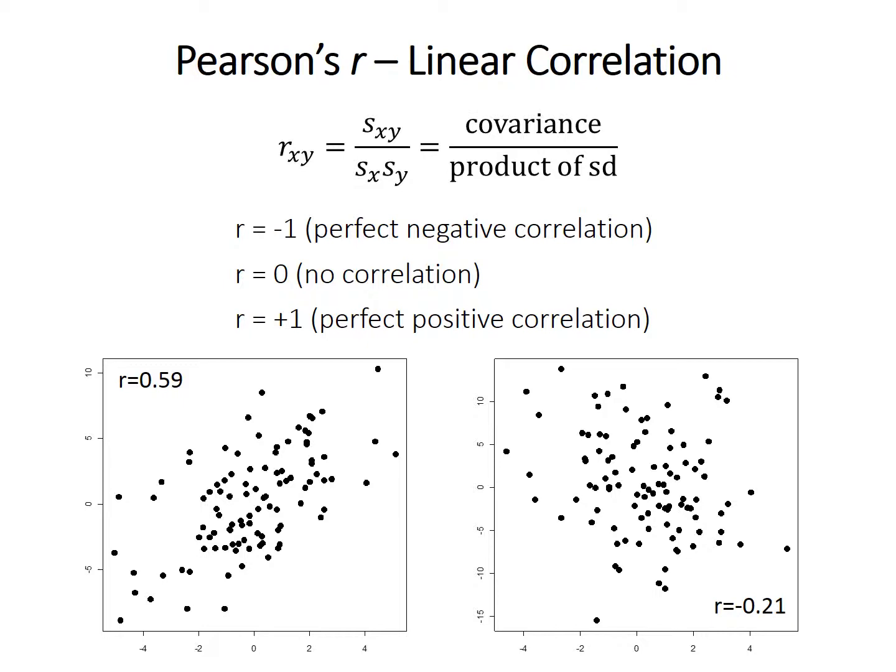r can range from −1, which is a perfect negative correlation (a perfect line sloping downwards), through 0, which is no correlation, to +1, which is a perfect positive correlation. The graphs shown illustrate two example data sets: the one on the left has a fairly strong positive correlation (r = 0.59), and the one on the right has a weak negative correlation (r = −0.21).